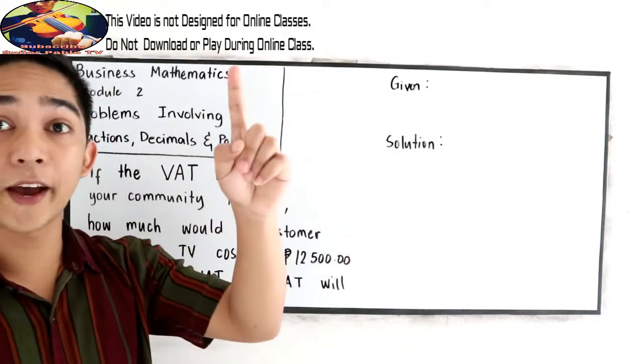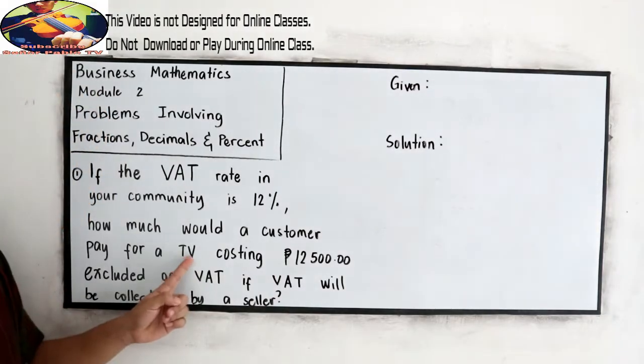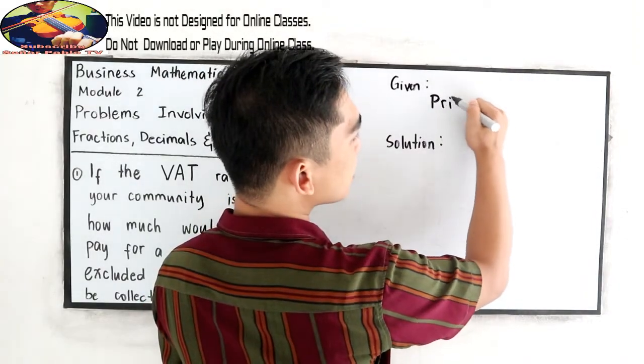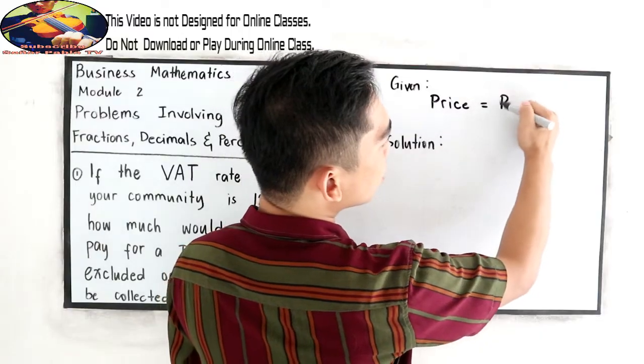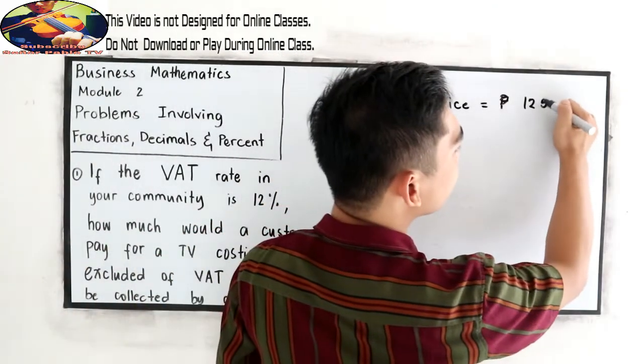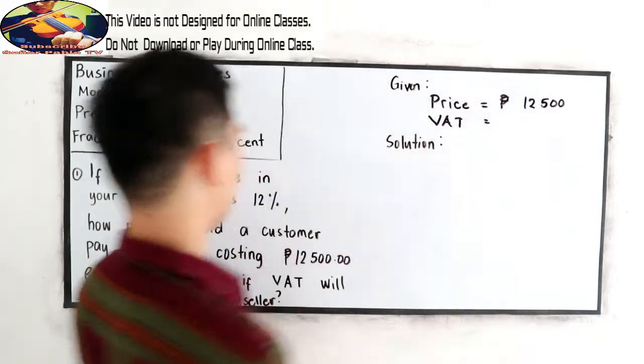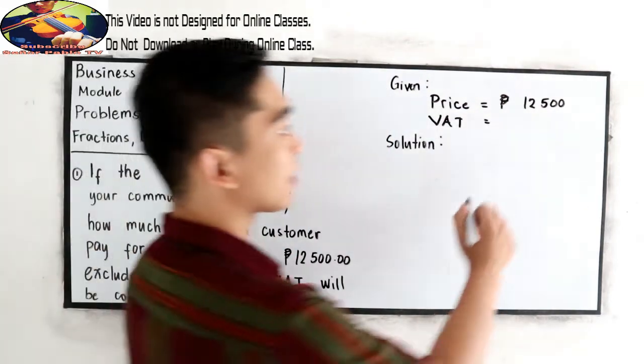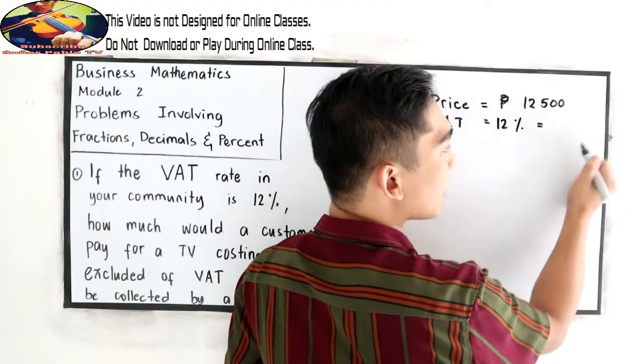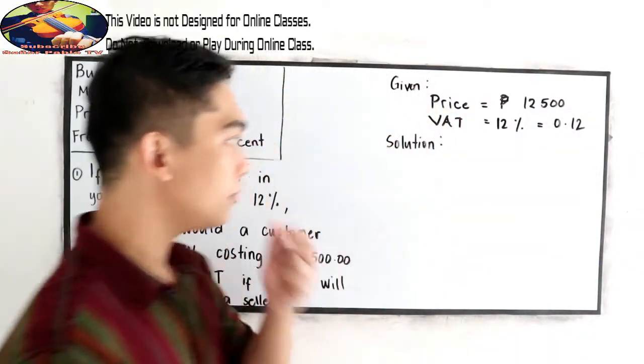First, let us find the given. The price is 12,500. The VAT rate is 12%. In decimal, that is 0.12.